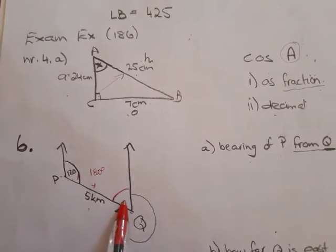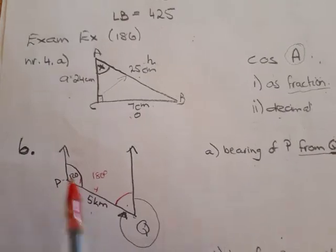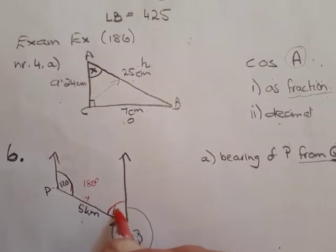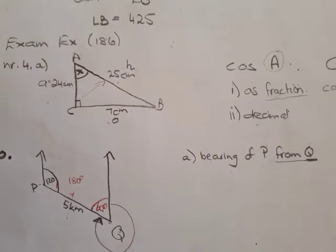So to get that angle you will subtract 180 minus 120 which gives you 60 degrees.